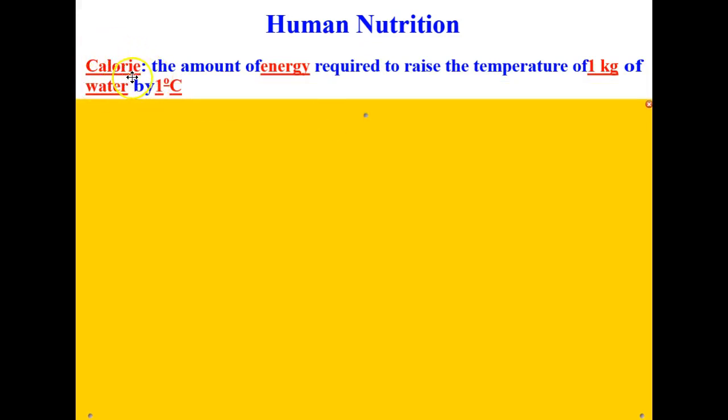Let's get started with the scientific definition of a calorie. Notice that our word calorie here starts with a capital C. Make sure you do that as well because there's a difference between the word calorie with a capital C and the word calorie with a lowercase c. A calorie is the amount of energy required to raise the temperature of one kilogram of water by one degree Celsius.